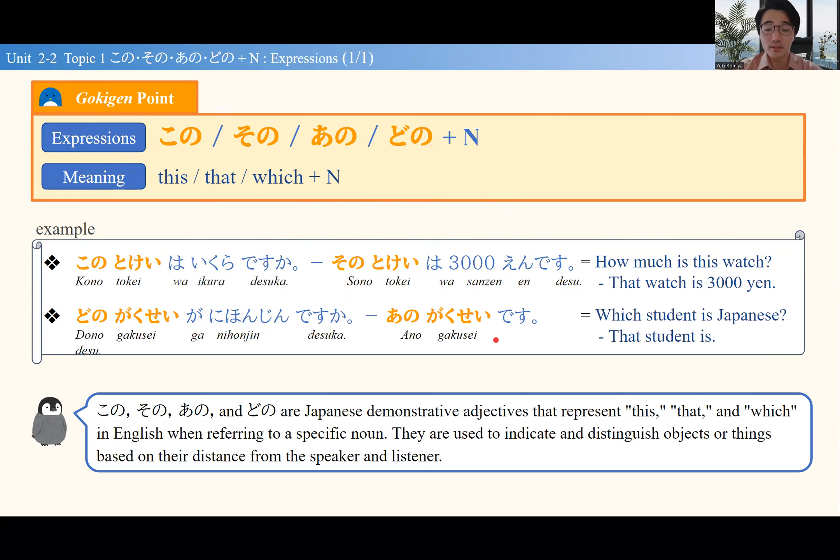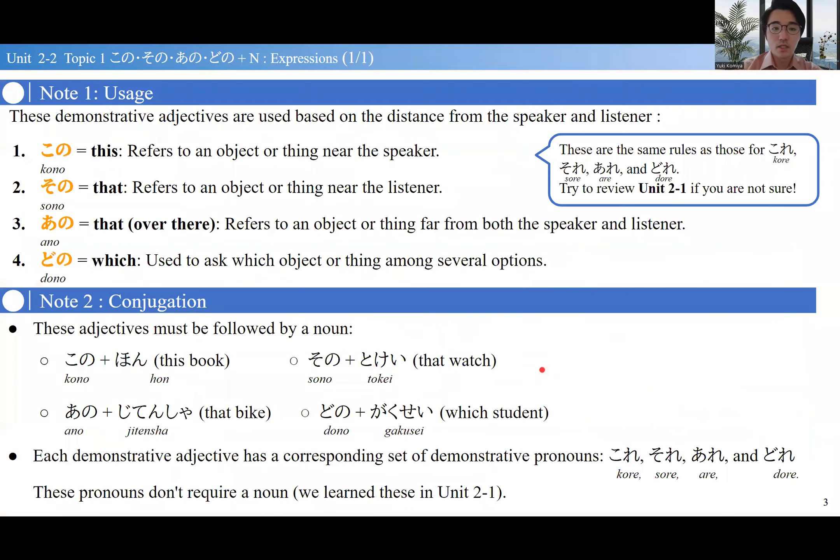あの学生です—that student is. Remember from the first lesson of Unit 2, we learned これ、それ、あれ、どれ. These had rules on which one to use depending on the distance of the object from the speaker and listener.